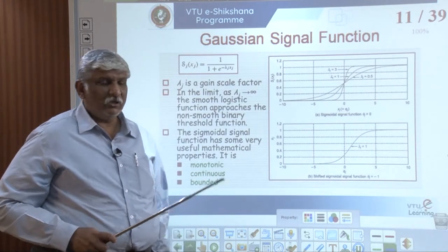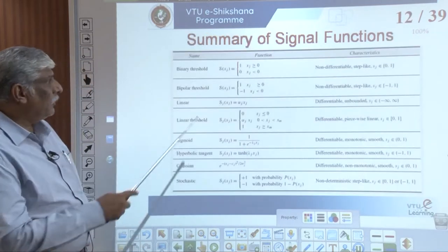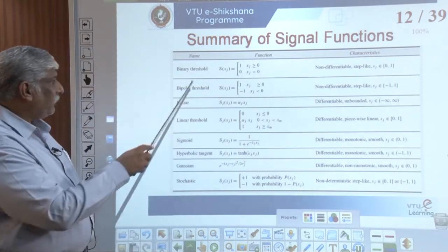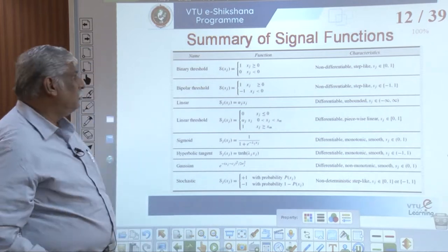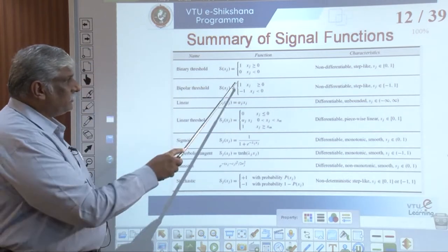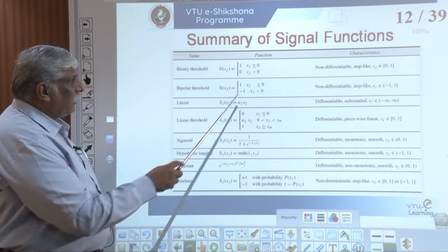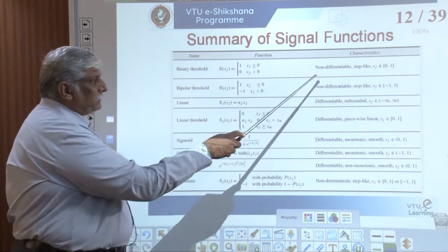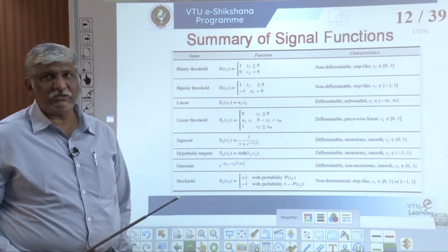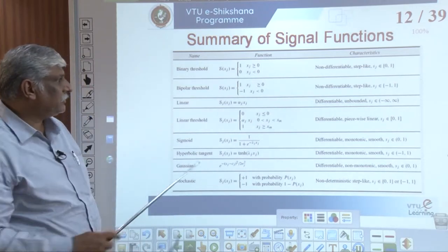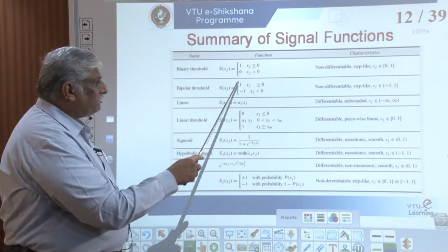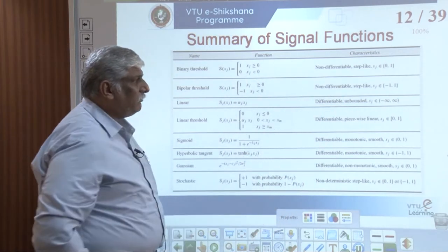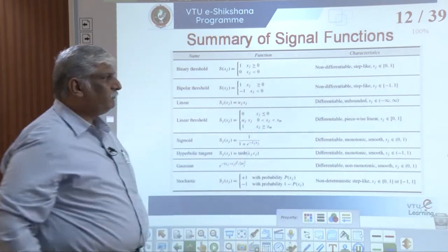The next one is the Gaussian signal function. Now here is a summary of signal functions. We have the binary threshold function which outputs 0 or 1 — non-differentiable, step-like. Then bipolar threshold, which uses −1 and +1 instead of 0 and 1 — also non-differentiable and step-like, with range from −1 to +1.